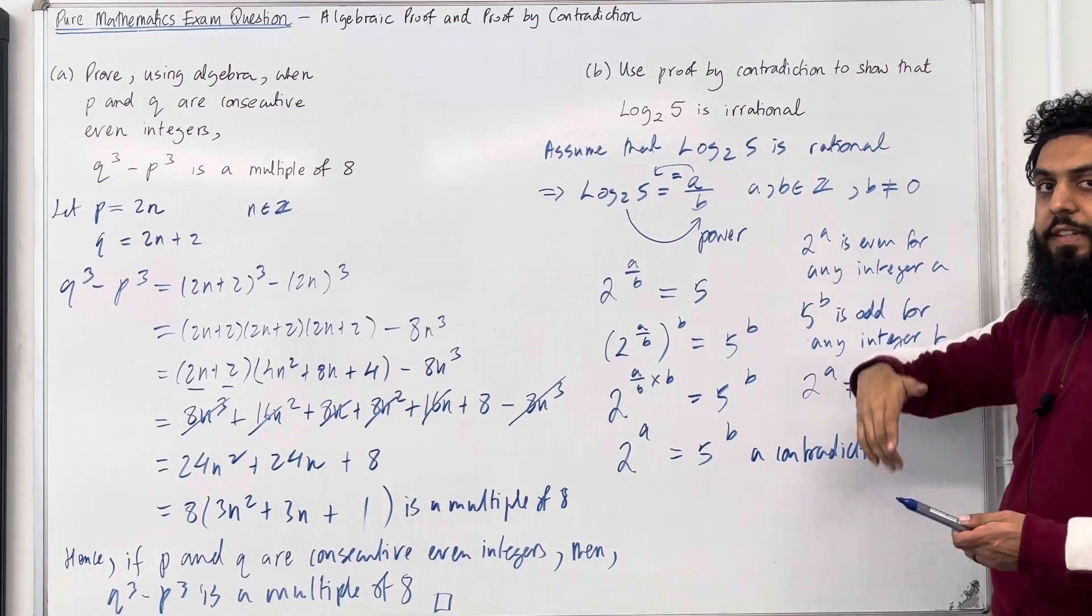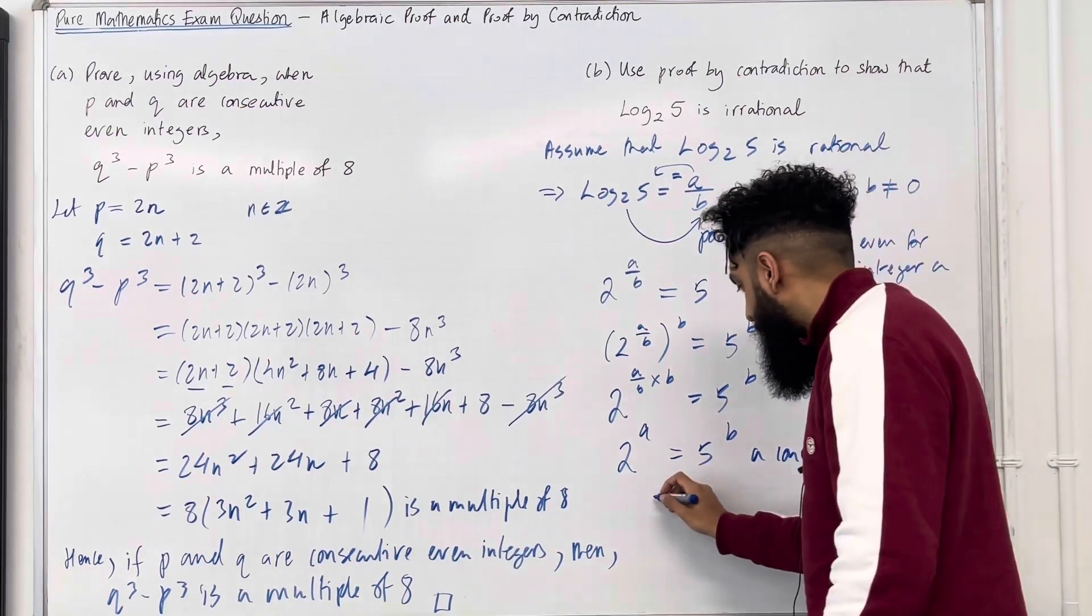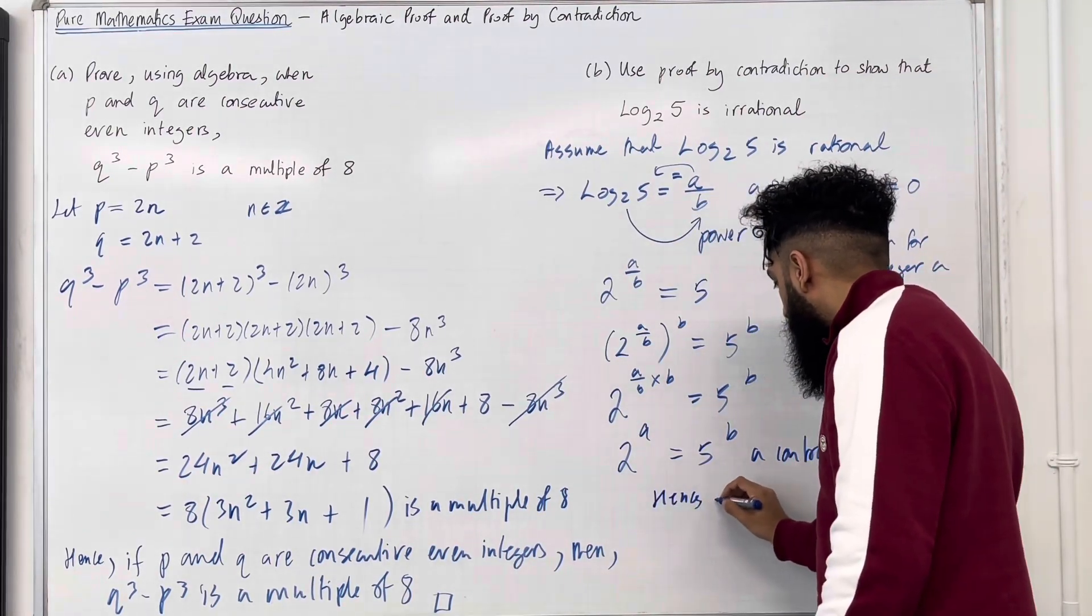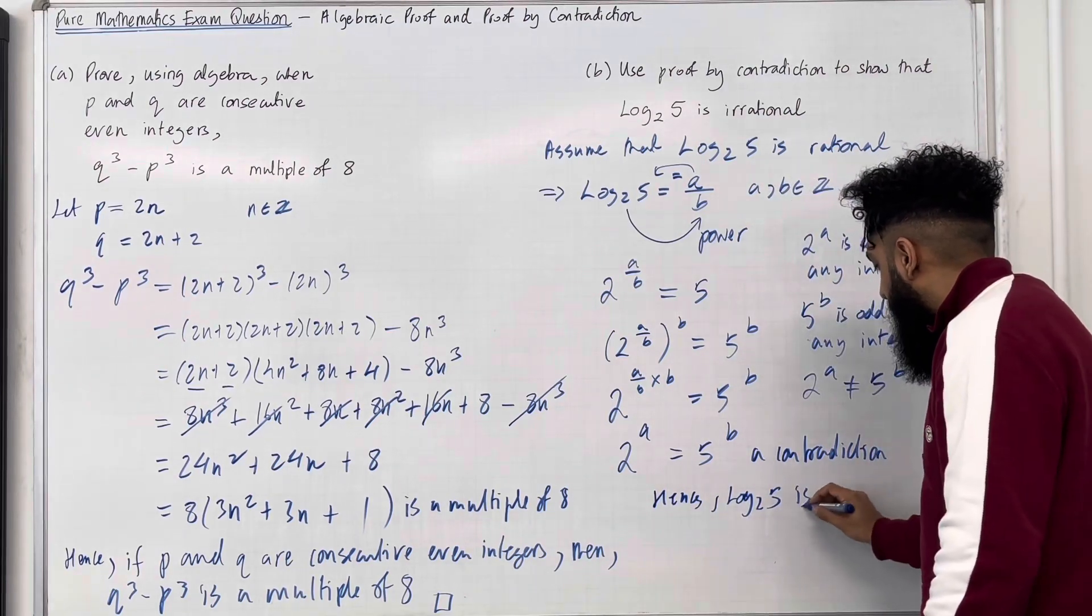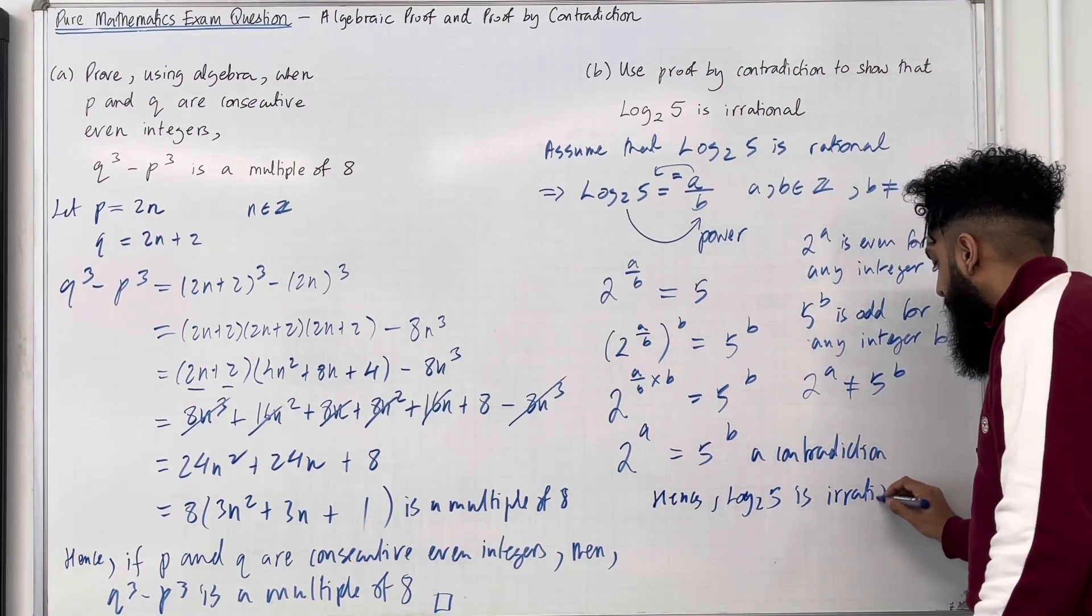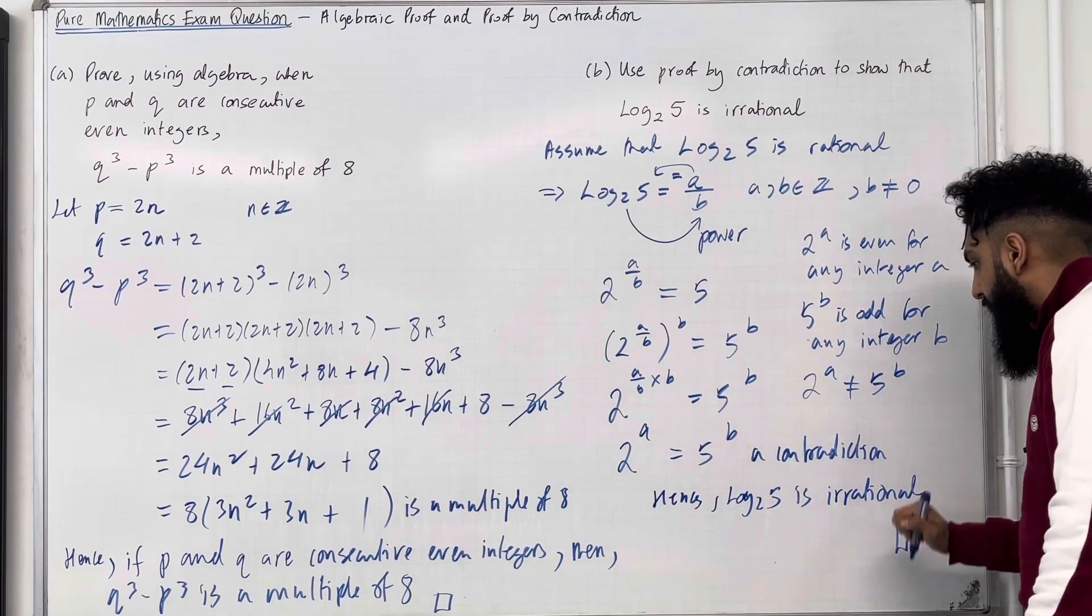Now we can write a conclusion. And that conclusion is that the original statement is correct. Hence, log base 2 of 5 is irrational. End of proof.